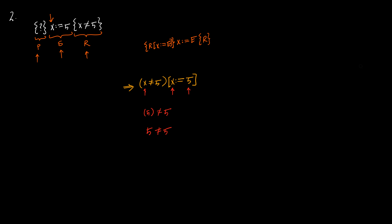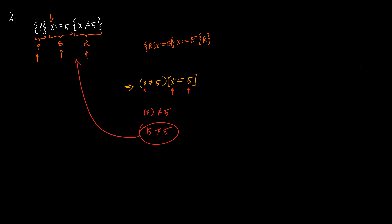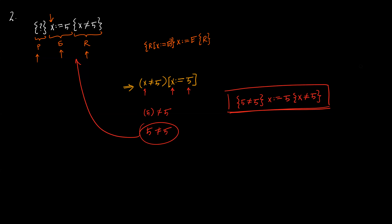This demonstrates that the precondition doesn't necessarily have to be a true statement or a theorem for the entire triple to be valid — 5 ≠ 5 is still a valid precondition for this assignment and postcondition. The complete Hoare triple is: {5 ≠ 5} x := 5 {x ≠ 5}.